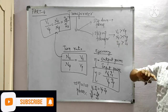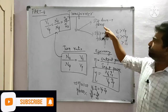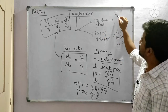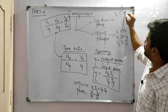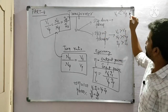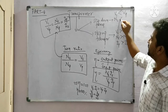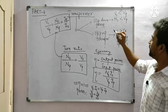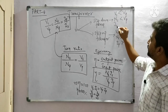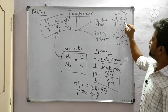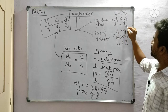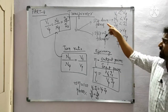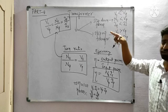In a step-down transformer, the voltage across the secondary is less than the voltage across the primary, the number of turns in the secondary is less than the number of turns in the primary, and the current in the primary is less than the current in the secondary.